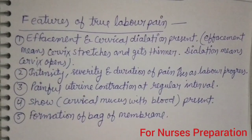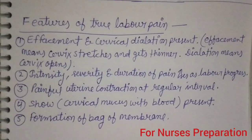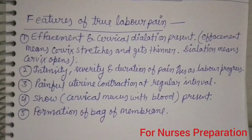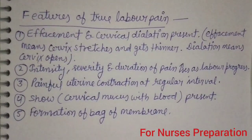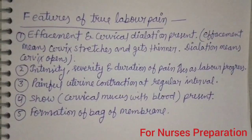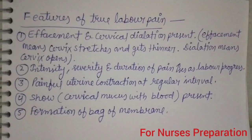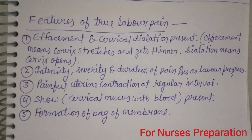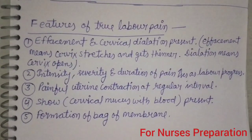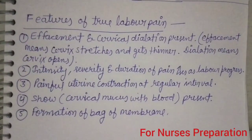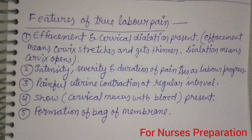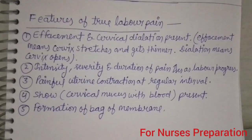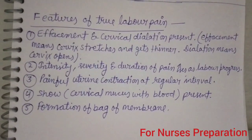The first feature of True Labour Pain: Effacement and Cervical Dilation is present during True Labour Pain. If a pregnant woman is having labour pain and she is having effacement and cervical dilation at that time, you can say she is having True Labour Pain. Effacement means the cervix stretches and gets thinner. Dilatation means the cervix opens, with total cervical dilation up to 10 cm. When the woman reaches 10 cm cervical dilation, we say she is in the 2nd stage of labour, and the first stage of labour terminates.